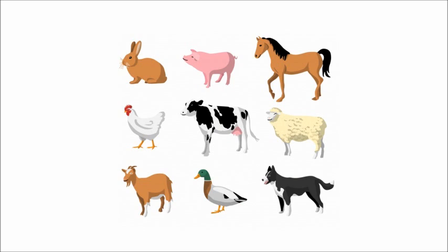The next word is domestic. These are domestic animals. Domestic animals do not harm people. Domestic animals are kept in farms.